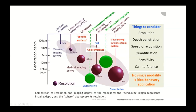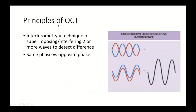The basic principle of OCT is based on interferometry. The technique analyzes reflected light waves to see if they are in the same phase or opposite phase. If they are in opposite phase, they cancel each other, producing a flat line. If they are in the same phase, they are additive — you see an amplification.